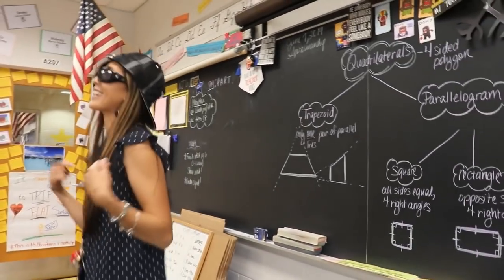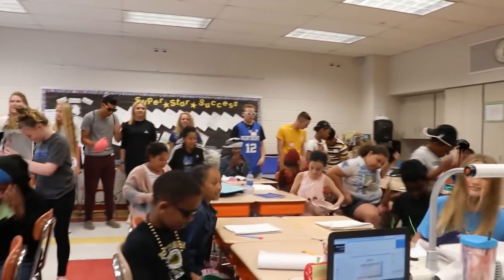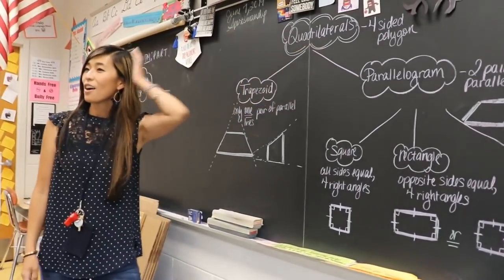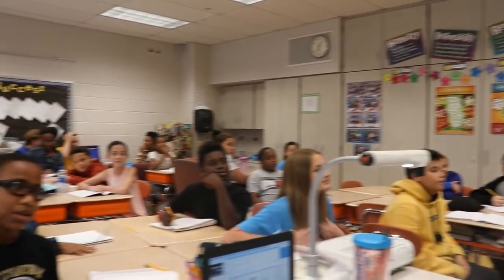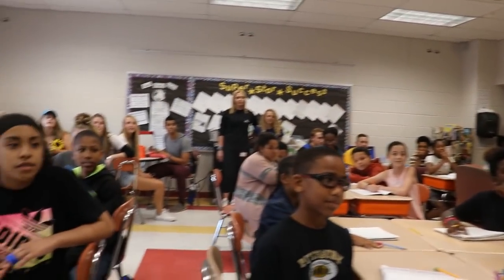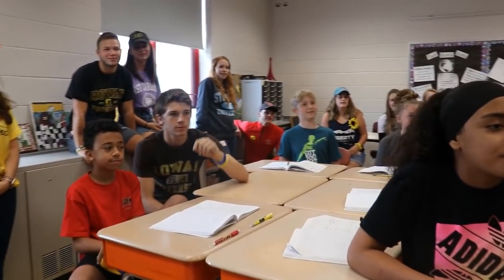All right, so boys and girls, like I was saying, quadrilaterals are polygons that have how many sides? Four. Very good. There are different ways that we can classify quadrilaterals. A trapezoid is one way. A trapezoid has how many pairs of parallel lines? One. How many pairs of lines intersect? One. Good.